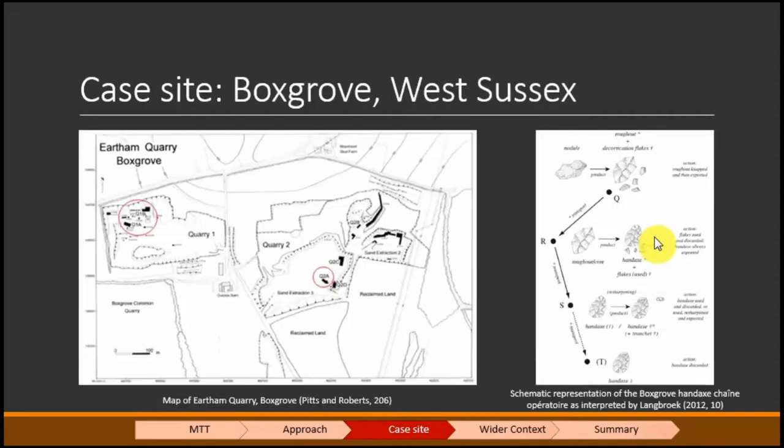My other site as has already been mentioned today is Boxgrove. It's in West Sussex and it's just a beautiful place with a nice beach nearby if you ever go, which I finally went to last week. I looked at three of the quarries: 2A, 1A and 1B because they have the most refit data available and it's the most up-to-date research. It's a half a million year old Acheulean site. There is Homo heidelbergensis remains but like I said I ignored species if possible.